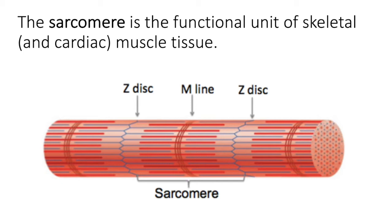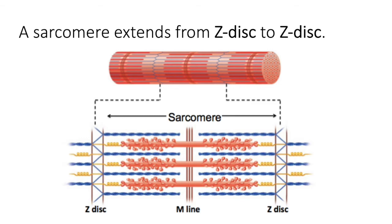A sarcomere extends from z-disc to z-disc and bears the important contractile proteins that will allow muscle cells to contract. The m-line is in the middle.